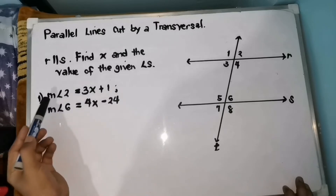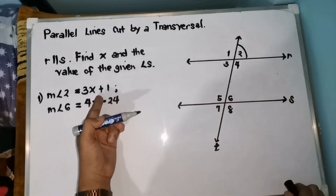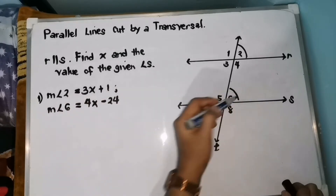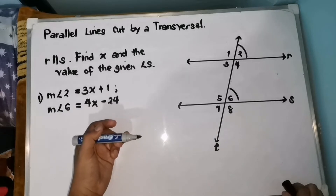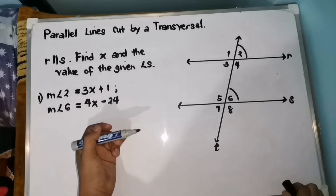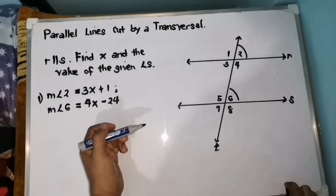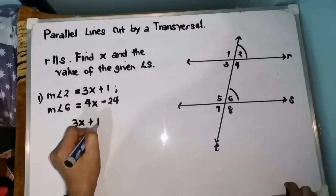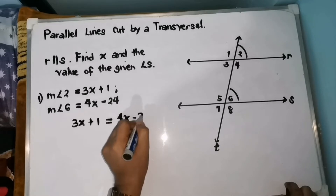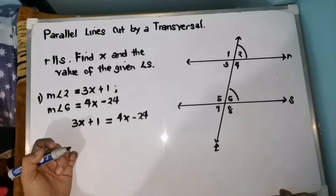So let's have the first example. Measure angle 2 — angle 2 is 3X plus 1, and the measurement of angle 6 is 4X minus 24. So let us first find the value of X. Para malaman kung paano natin i-equate, i-identify muna natin yung angle relationship na ini-exhibit ni angle 2 and angle 6. So they are corresponding angles, and according to the properties, they are congruent. So i-equate natin: 3X plus 1 must be equal to 4X minus 24.